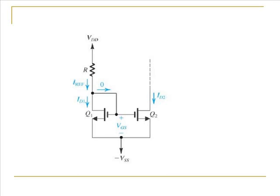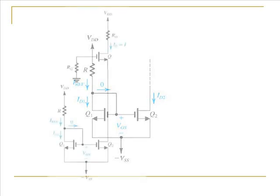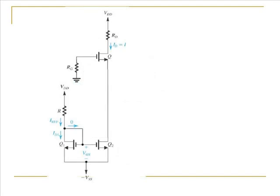This is a current mirror and the current that is set up by the MOSFET Q1, the same value of current also flows in the MOSFET Q2. So we have this circuit where the current mirror replaces the constant current source and biases the MOSFET.